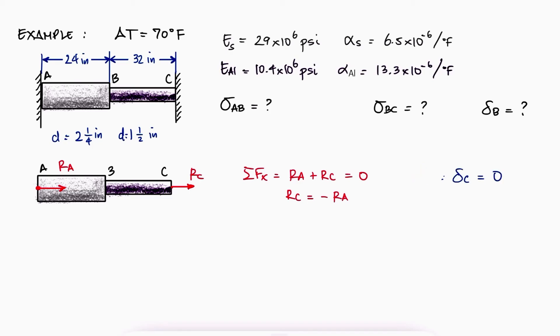So let's write that the deflection of C with respect to A is zero, which means that the deflection of B with respect to A plus the deflection of C with respect to B is zero. From A to B, we have both an axial deformation due to the internal force and the temperature changes, and we have the same two expressions for section BC.